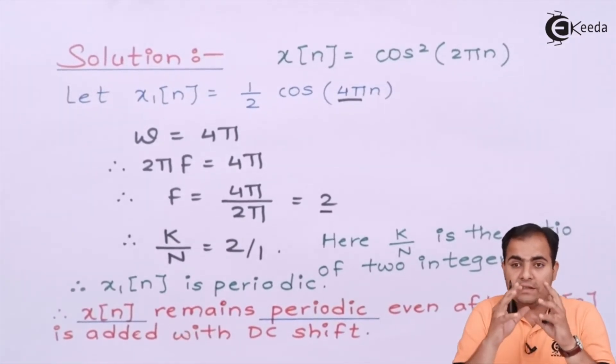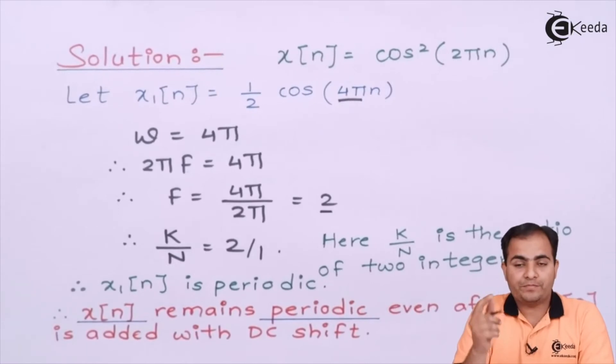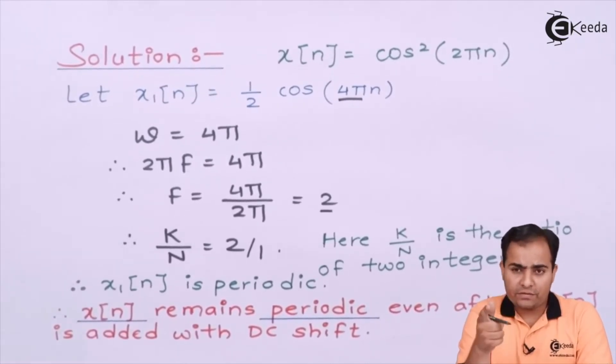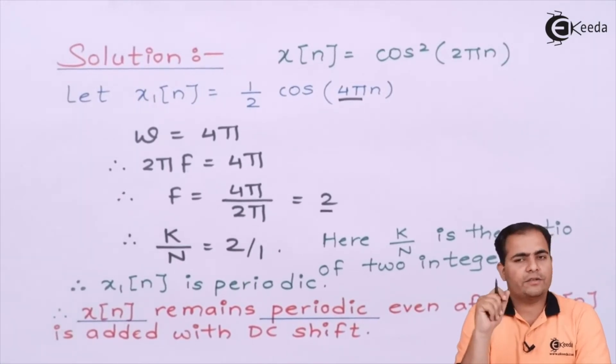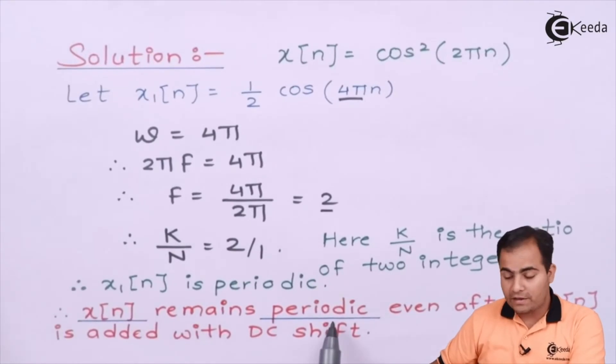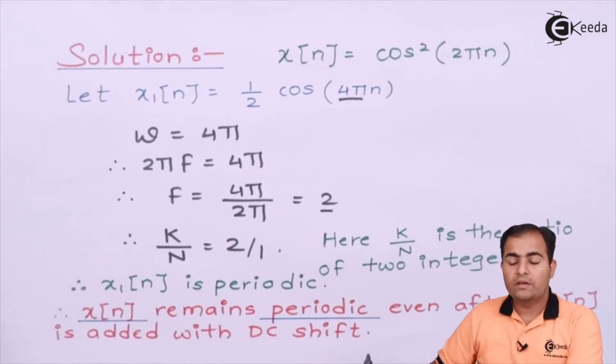As I told you earlier, x[n] completely depends on x₁[n]. If x₁[n] is periodic, then DC shift doesn't matter at all. If x₁[n] is periodic, then automatically x[n] is also periodic. That's why x[n] remains periodic even after x₁[n] is added with a DC shift.